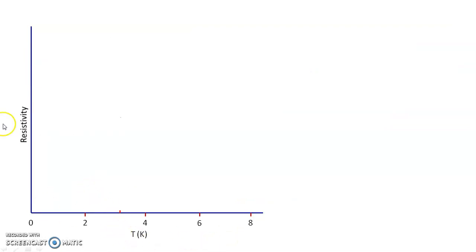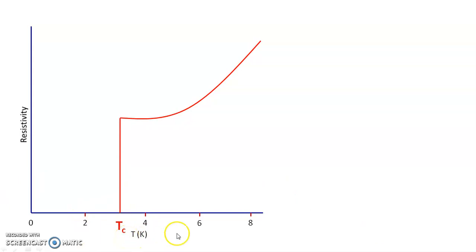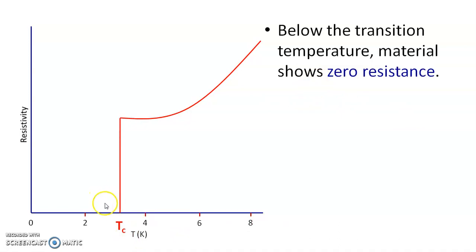When absolute temperature is plotted versus resistivity, as the temperature decreases, resistivity decreases, and at a certain temperature resistivity abruptly drops to zero — suddenly it drops to zero. This temperature at which resistivity suddenly drops to zero is the transition temperature or critical temperature, denoted by Tc.